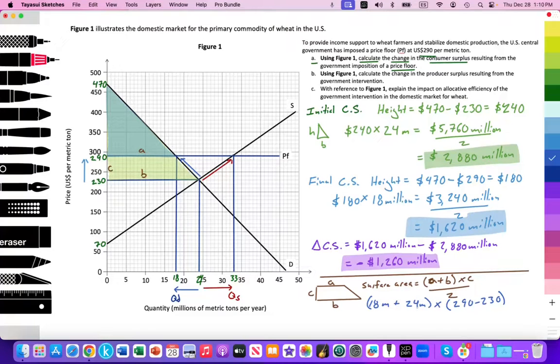18 million plus 24 million is 42 million, times 290 minus 230 is 60. And that's going to equal 2,520, divide that by 2, again, million. And that's going to equal the final answer.